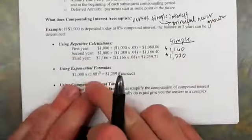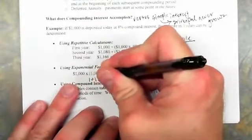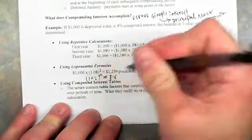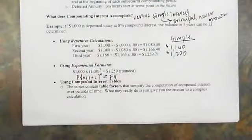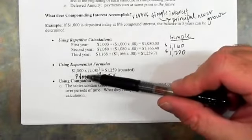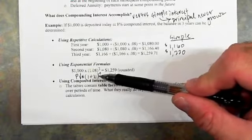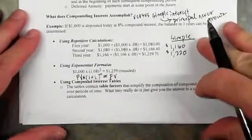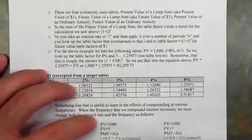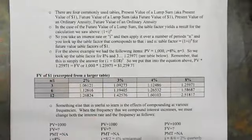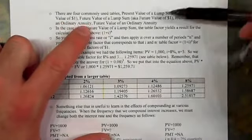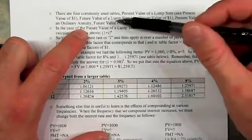We can use the exponential formula: $1,000 times (1 + i) raised to the number of periods, which gives the future value. So a present value of $1,000 invested today at 8% over three years gives a future value of $1,259. We can also use a compound interest table to simplify the accounting. There are four types of tables: present value of a lump sum (PV of $1), future value of a lump sum (FV of $1), present value of an ordinary annuity, and future value of an ordinary annuity.